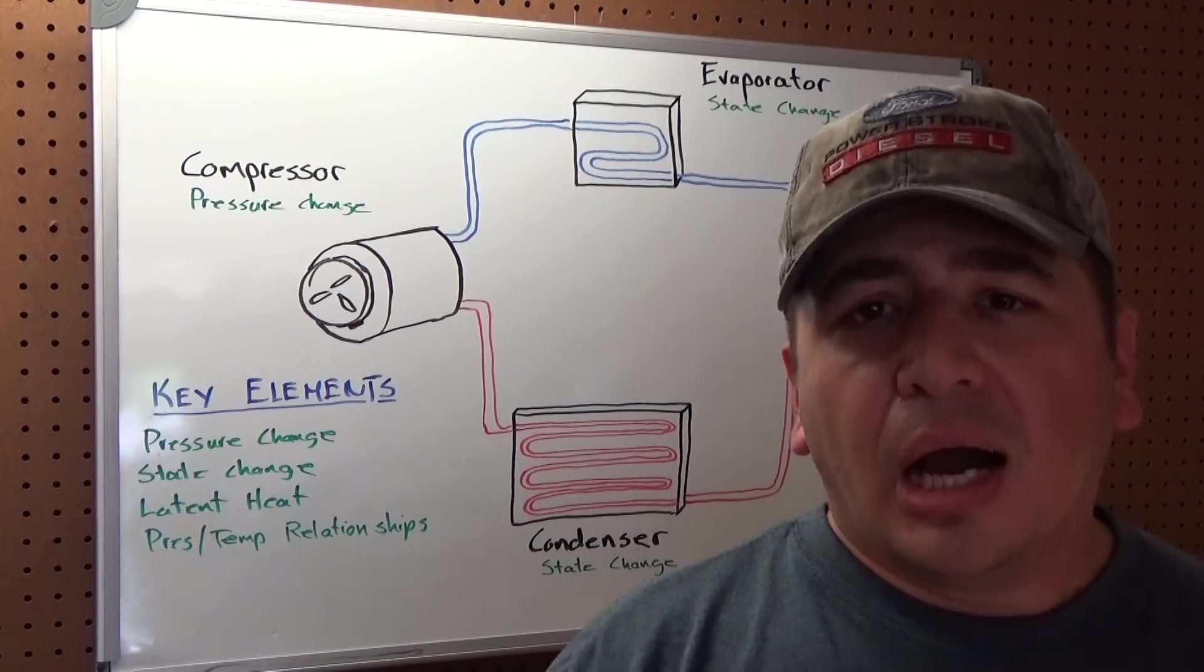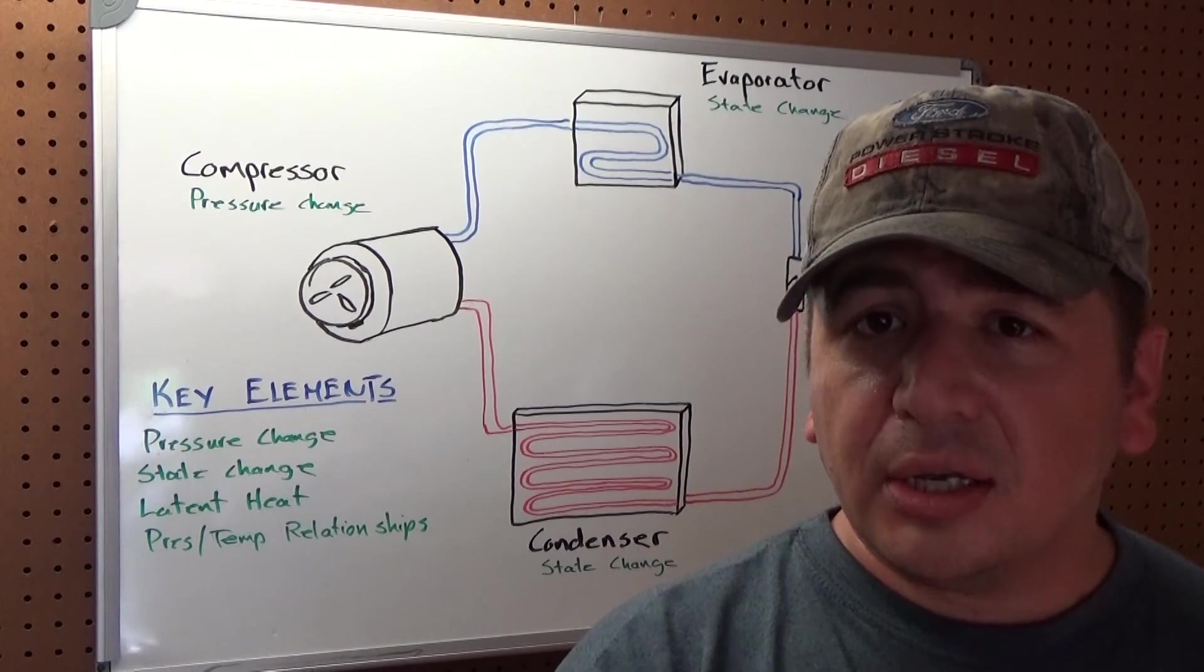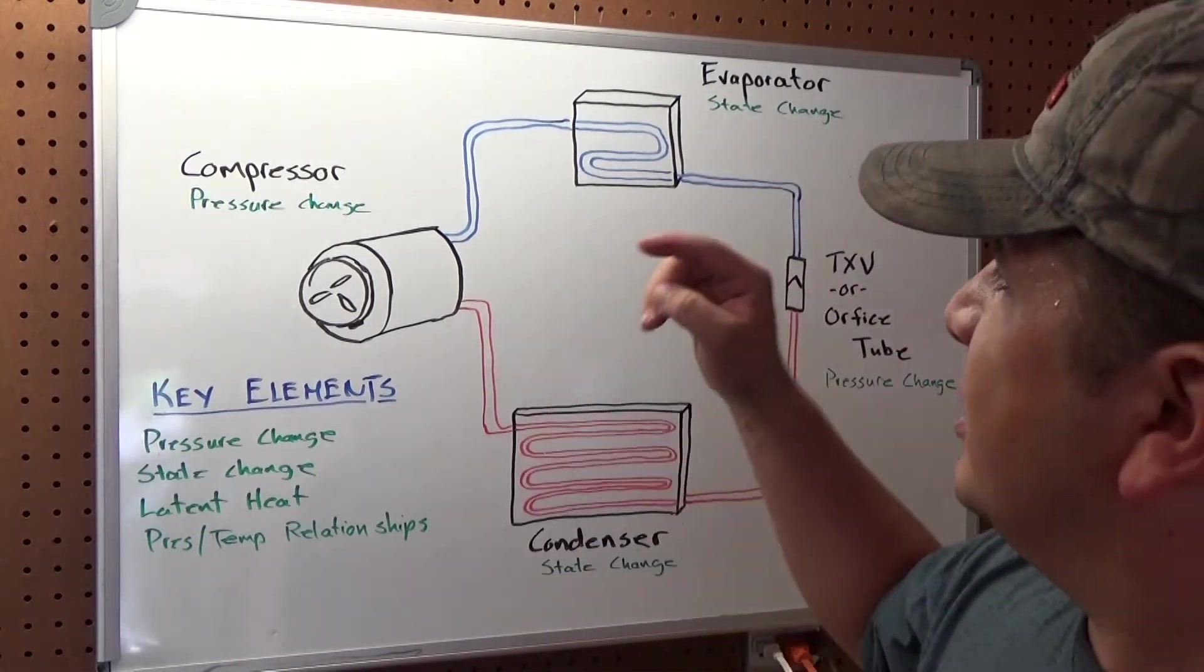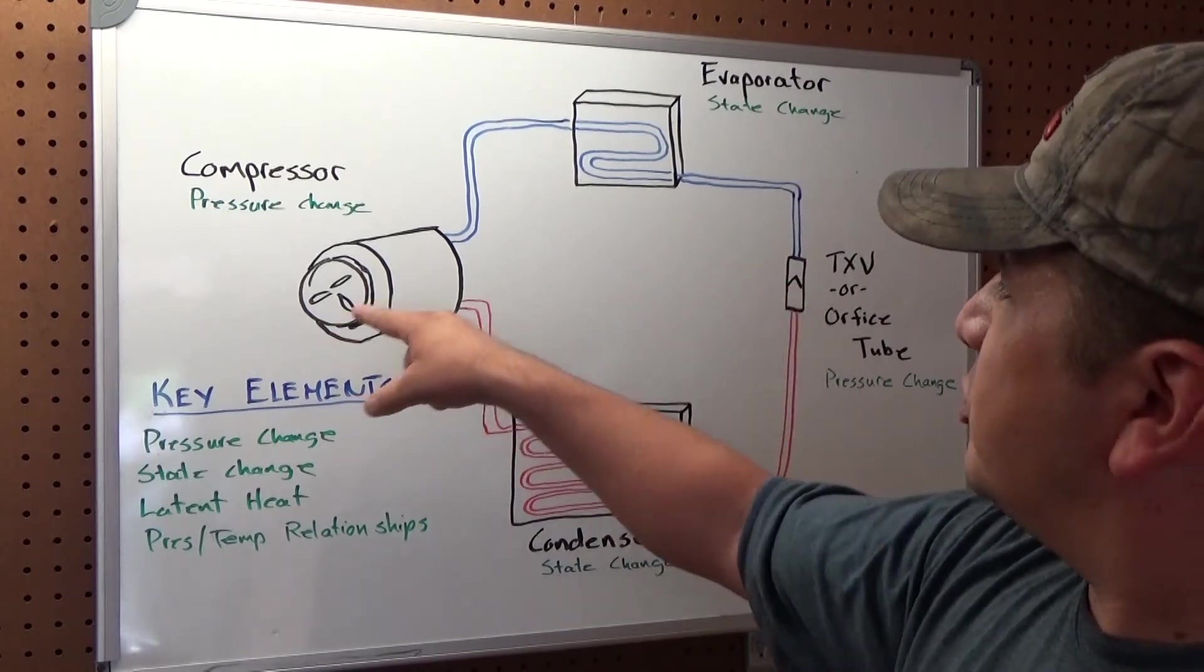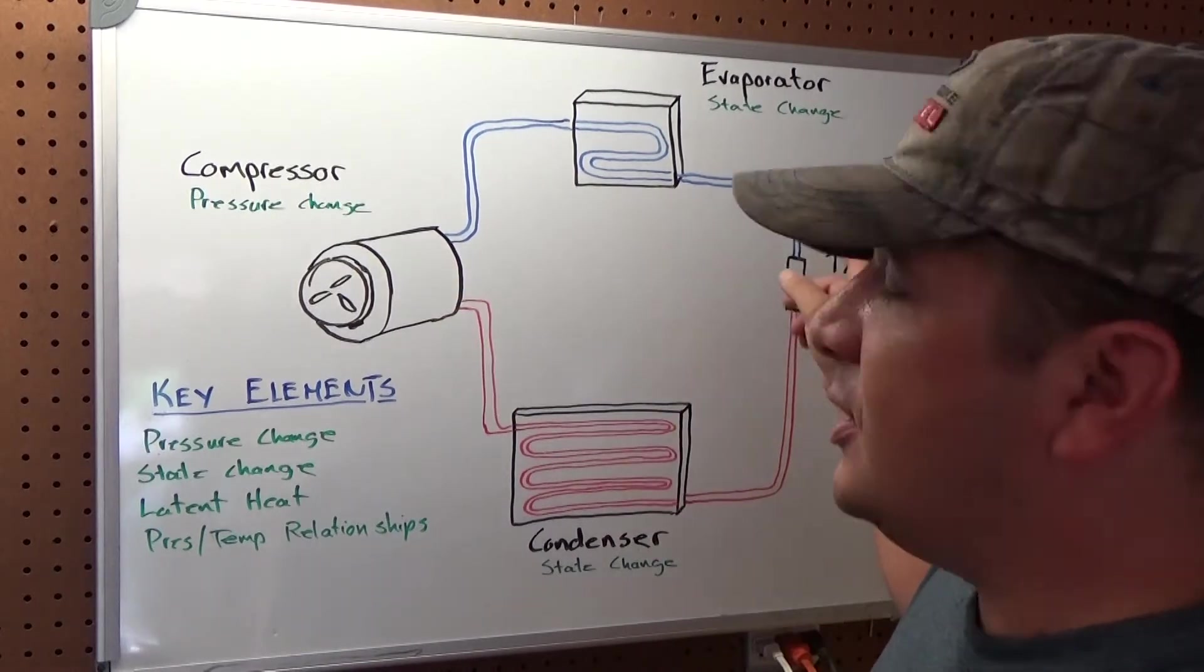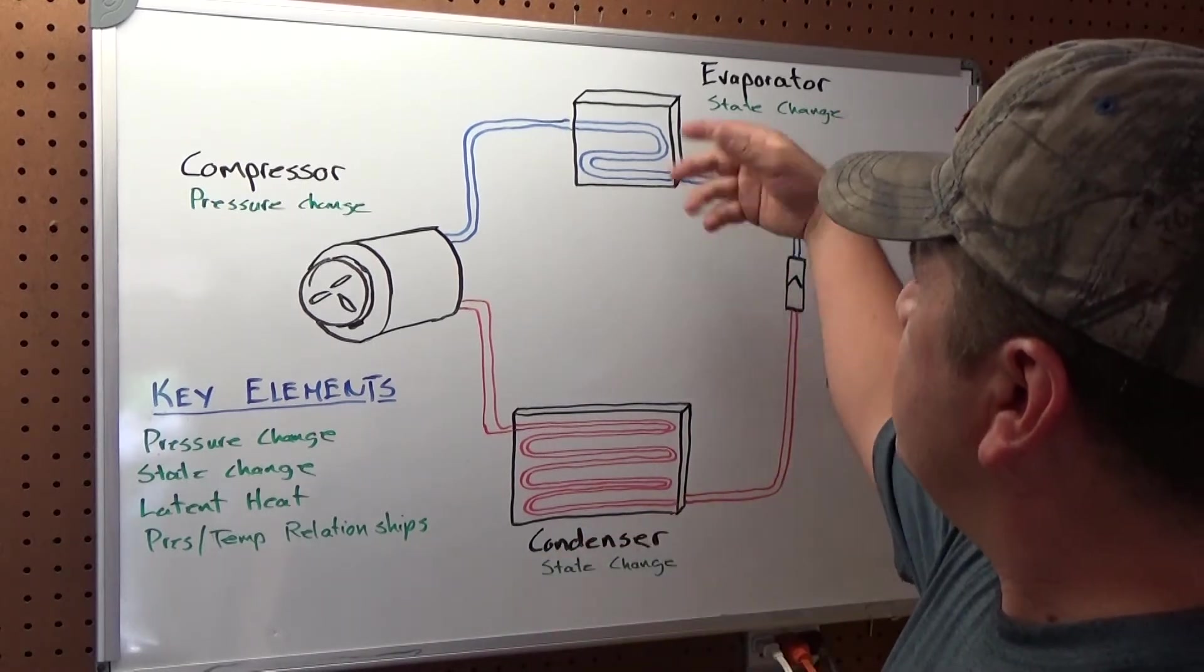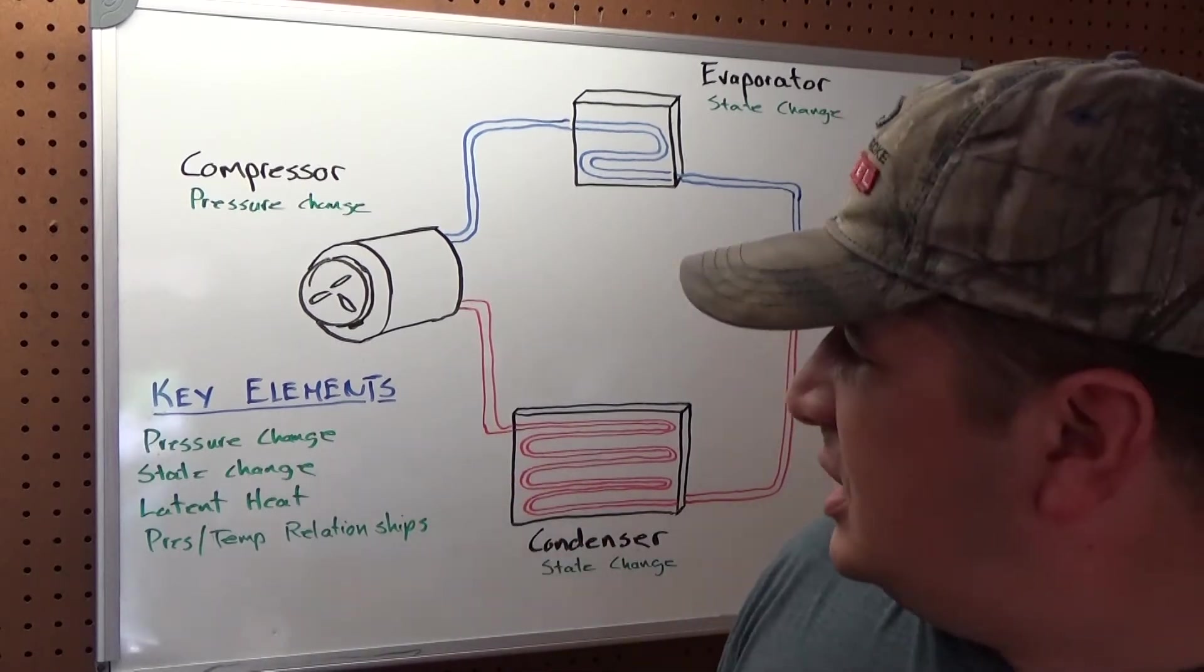Now, as I said, some of the things this hinges on, obviously, pressure temperature relationships. We talked about how that works with an increase in pressure is an increase in temperature, with a decrease in pressure is a decrease in temperature. And both of those come into play here. And you have two items in here that change pressure and split high-low side, which is the compressor and the orifice tube or expansion valve. And you have two items that change state. This changes from a liquid to a gas and this changes from a gas to a liquid. So, those are some of the key points.